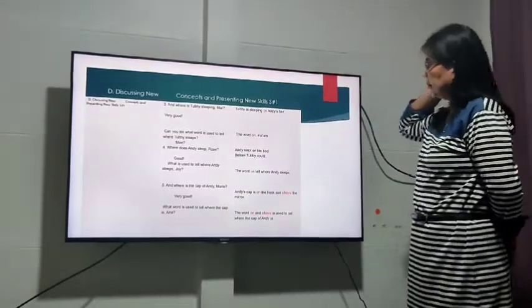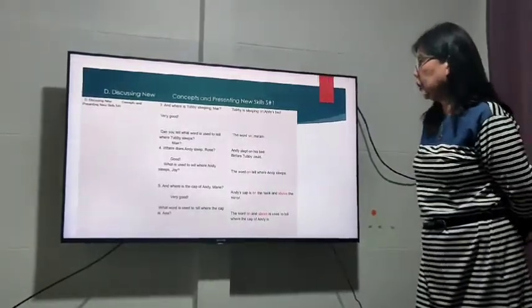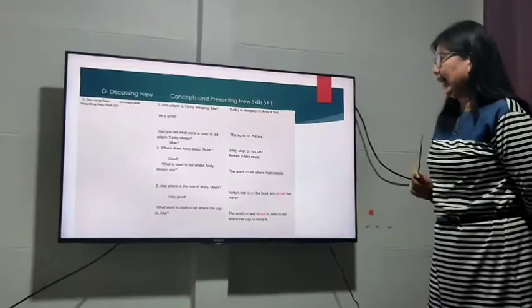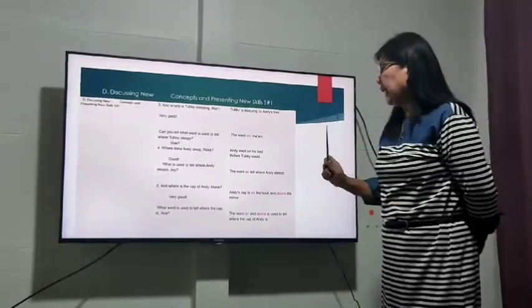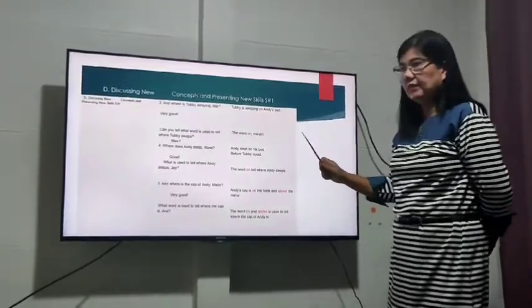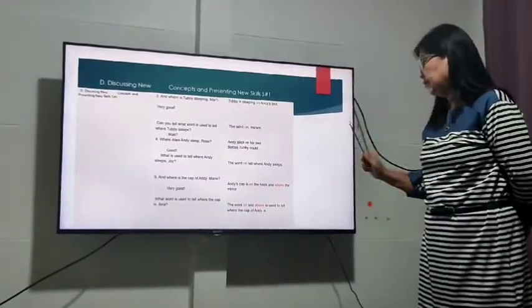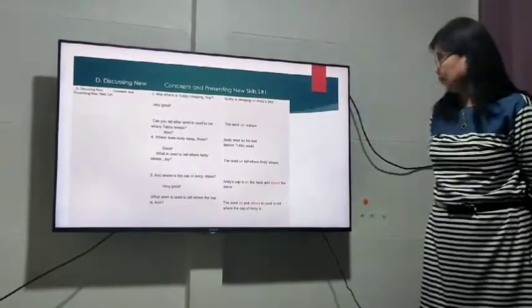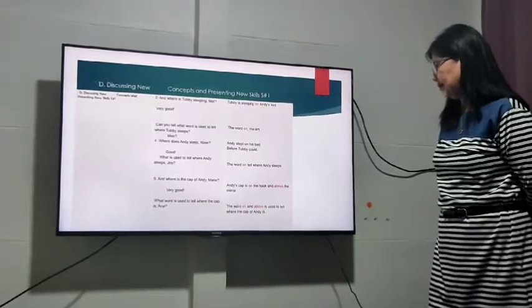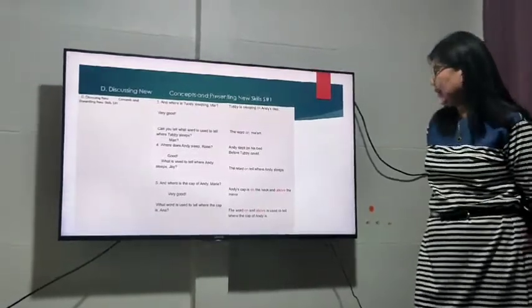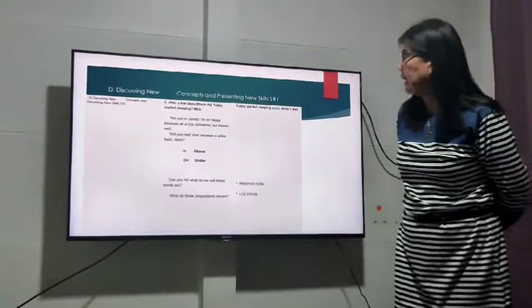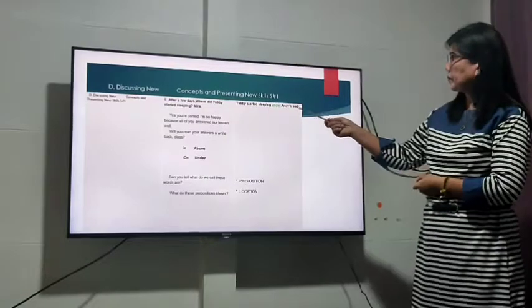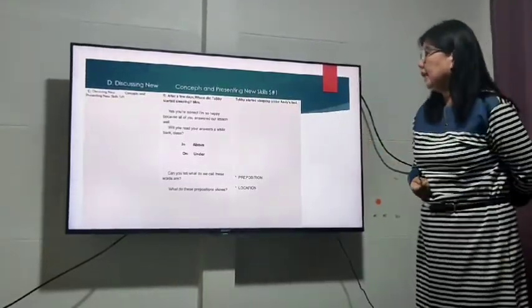Andy slept on his bed before Tubby could. Okay good. What is used to tell where Andy sleeps? The word on. Next, number five, what is the cap of Andy? Andy's cap is on the hook and above the mirror. Very good. What word is used to tell where the cap is? The word on and above is used to tell where the cap of Andy is. Very good. Next, after a few days where did Tubby started sleeping? Tubby started sleeping under Andy's bed. Yes correct.